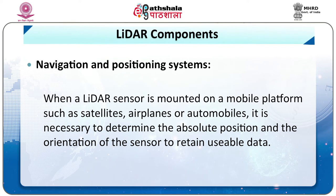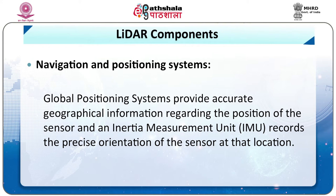The next component is navigation and positioning systems. When the LIDAR sensor is mounted on a mobile platform such as satellites, airplanes or automobiles, it is necessary to determine the absolute position and orientation of the sensor to return usable data. Global positioning systems provide accurate geographical information regarding the position of the sensor, and the inertial measurement unit (IMU) records the precise orientation of the sensor at that location. These two devices provide the method of translating sensor data.